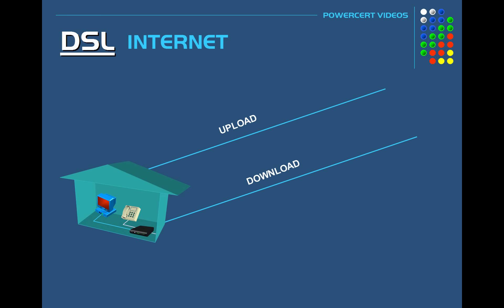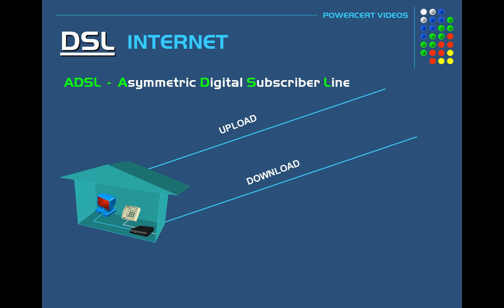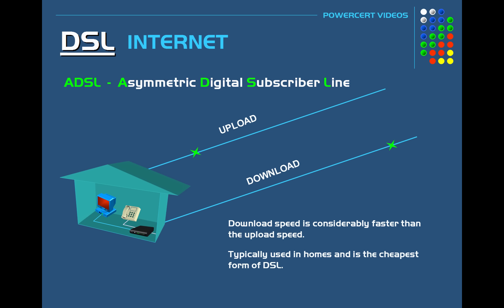There are a few different forms of DSL. One is called ADSL, which stands for Asymmetric Digital Subscriber Line. It's called asymmetric because the download speed is considerably faster than the upload speed. This type of DSL is mainly used in homes, because home users typically download a lot more than they upload. ADSL is also the cheapest form of DSL.